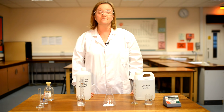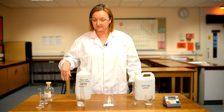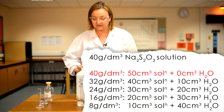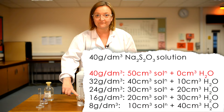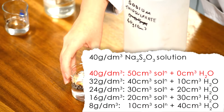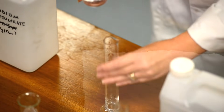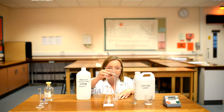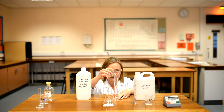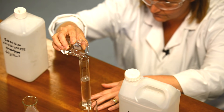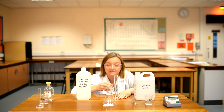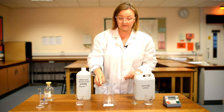To start with I'm going to use the most concentrated sodium thiosulfate, which is 40 grams per decimetre cubed as it comes out of the container. I'm going to measure out 50 centimetres cubed into my measuring cylinder, getting down to eye level so I can see the level accurately, filling up almost to the mark and then a little bit more until I've got exactly 50 centimetres cubed, then pouring that into the beaker.